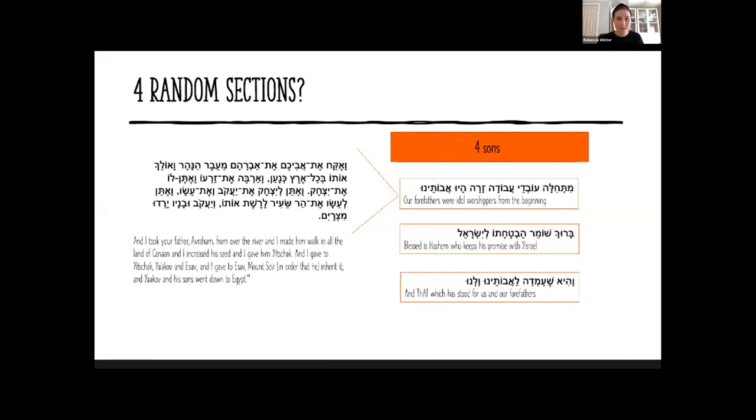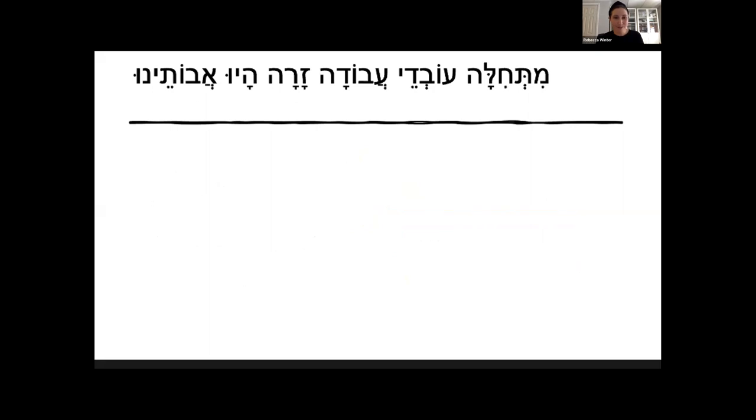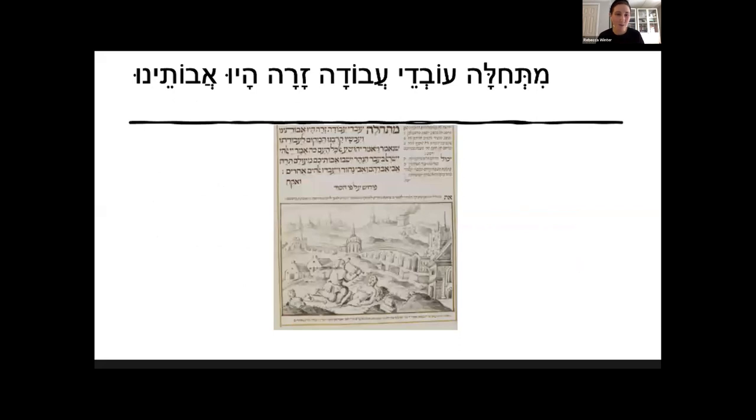After we read this paragraph, then we go back in time and read the Brit Bein HaBetarim that we just reviewed, which to me is very strange. I think there's a lot of questions about this paragraph. What is it really doing here and what does it have to do with the subsequent paragraphs, the Brit Bein HaBetarim and V'hi She'amda? And really, why do we need it at all?